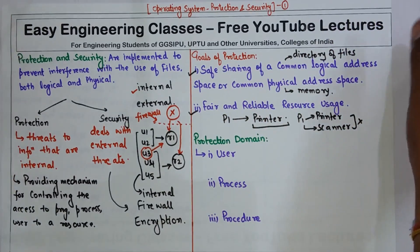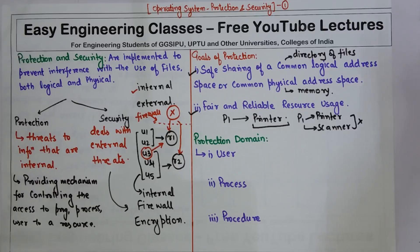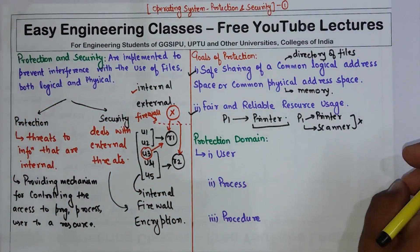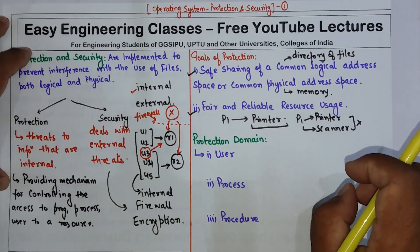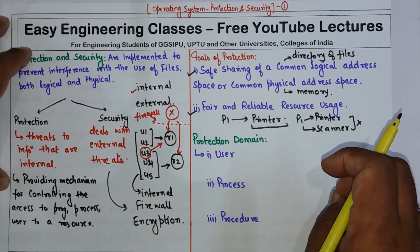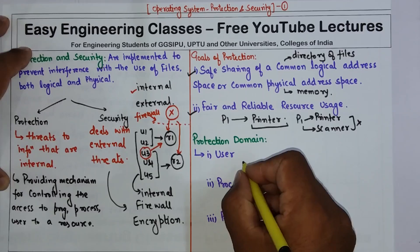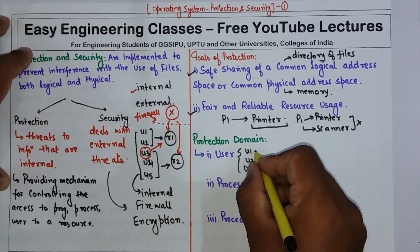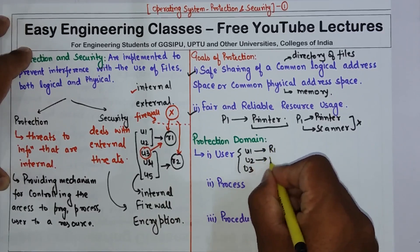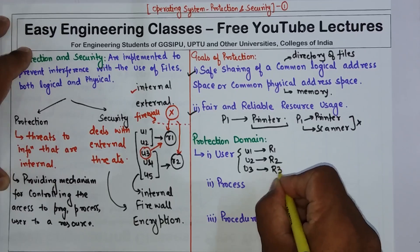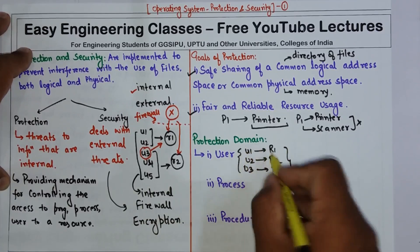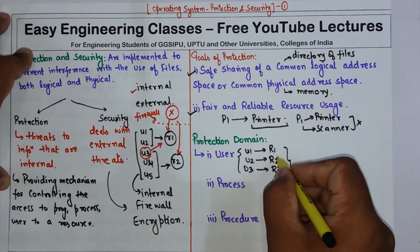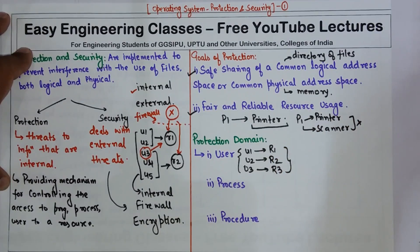There are different domains of protection. A computer system can be considered a collection of processes and objects. There are three different domains in which a protection mechanism can be applied. First, each user may be a domain. The set of objects that can be accessed depends on the identity of the user. For example, if we have three users U1, U2, and U3, each user has its own domain — U1 is allowed to use R1, U2 to use R2, and U3 to use R3. Domain switching occurs when the user is changed.